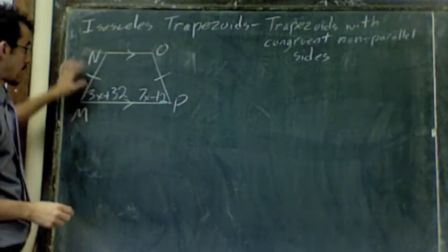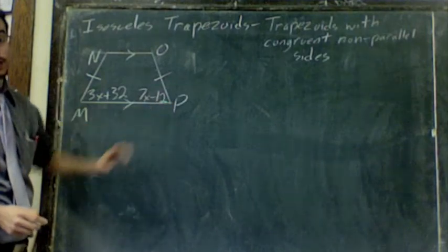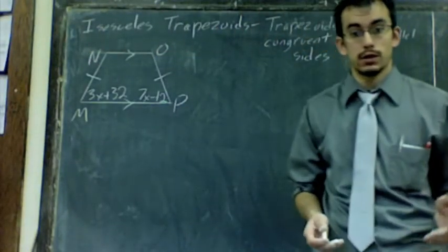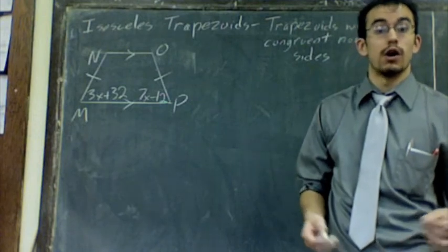And that NM is congruent to OP. That's what makes this an isosceles trapezoid. It is a trapezoid where its non-parallel sides are congruent.